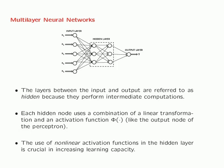The layers between the input and output are referred to as hidden because they perform intermediate computations. This doesn't mean that you can't examine the activations of the nodes if you want to examine what's going on inside your network. What it really means is that from an input-output perspective, you don't see the values of these activations as part of either the input or the output.